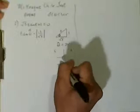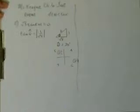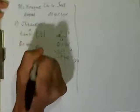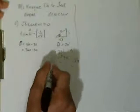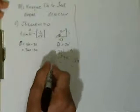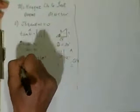...we use 'All Students Take Calculus.' Tangent is negative in quadrant 2 and quadrant 4. So theta is equal to 180 minus 30 and 360 minus 30. That gives us theta equals 150 degrees and 330 degrees. Checking the answer key — 150 and 330. Perfect.